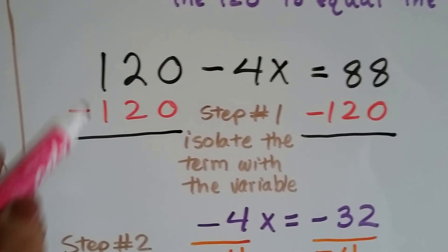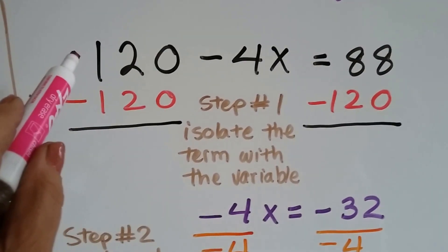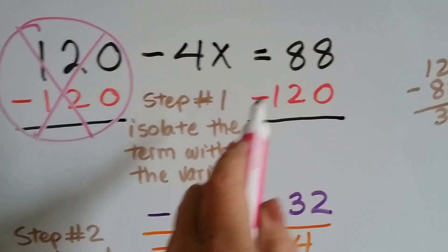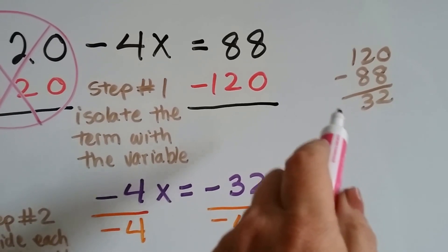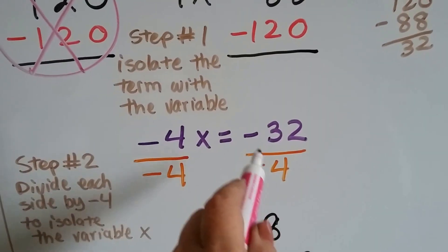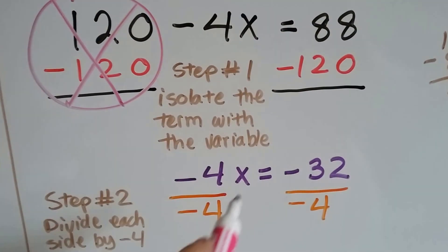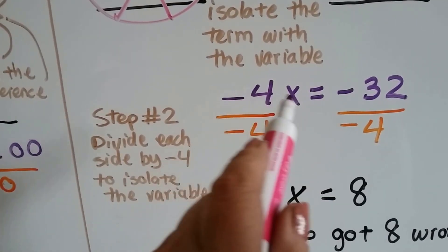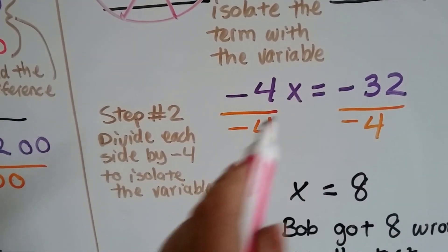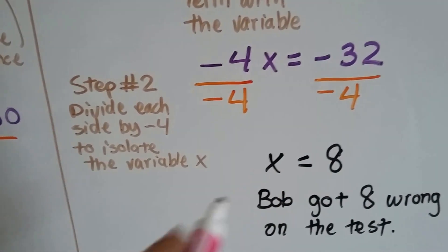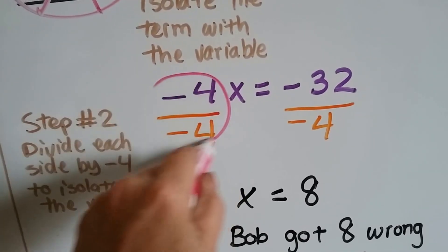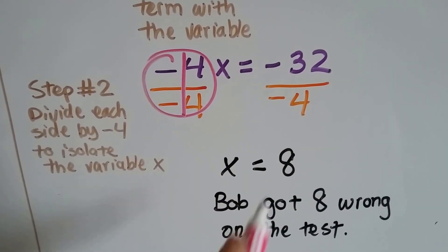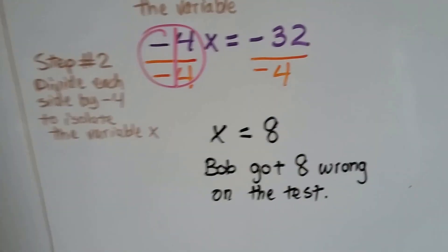Step one is to isolate the term with the variable. Because it's a positive 120, we subtract 120 from both sides. 120 minus 120 makes zero. 88 minus 120 gives us negative 32, because 120 is so big it pulls 88 into the negatives. So we have negative 4x equals negative 32. Because negative 4x means negative 4 times some number x, the opposite of multiplication is division. We divide both sides by negative 4. Negative 4 over negative 4 makes 1, and negative 32 divided by negative 4 is positive 8, because the signs are the same. So x equals 8 — Bob got 8 wrong on the test.